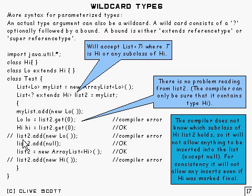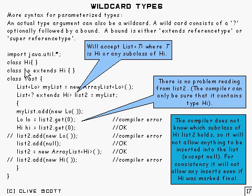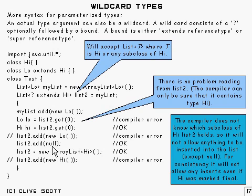If we try and add a Low to List2, that will also give a compiler error. The compiler doesn't know which subclass of High List2 actually contains. Although we've only got High and Low here, there may be other classes further down, and you can't go adding a new Low to one of those. The only thing you can in fact add to List2 is null.